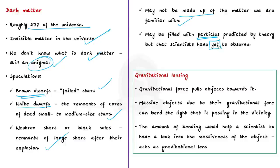Since scientists cannot see dark matter directly, they have found other ways to investigate it. One indirect method is gravitational lensing. A massive object has a tremendous gravitational field, and such massive objects can bend the light passing in their vicinity. The amount of bending helps scientists assess the massiveness of the objects, and based on this they think they can also study dark matter. Additionally, scientists at NASA think they have a direct way to detect dark matter using the Fermi Gamma-ray Space Telescope, because dark matter has a lot of gamma-ray releasing processes.